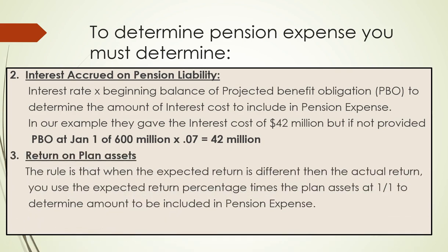For return on plan assets, when the expected return differs from the actual return, you use the expected return percentage times the plan assets at January 1 to determine the amount included in pension expense. In our example, we take 400 million times 10% and get 40 million.